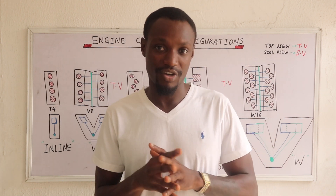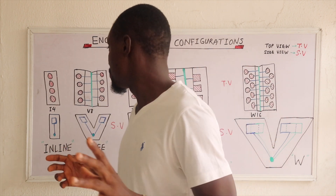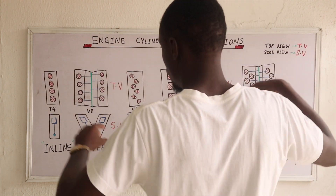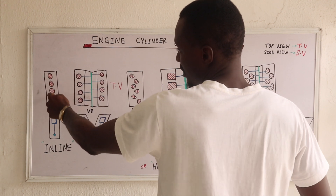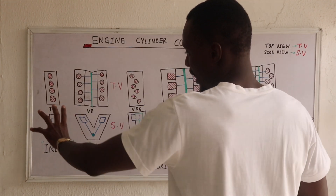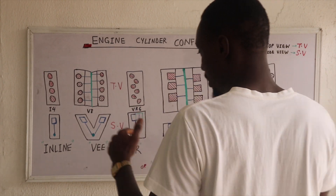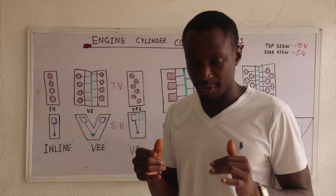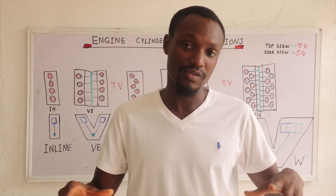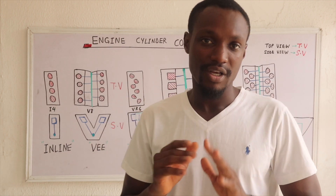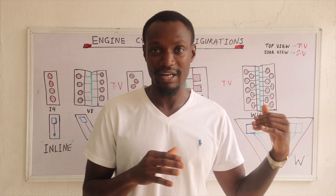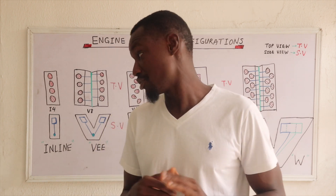Cylinder configuration is simply how the cylinders are arranged in the engine. The top diagrams show a top view — looking at the engines from above, where you can see the cylinders from that perspective. The side view shows the engines from the side. I'm not necessarily saying front or side because the engine could be positioned transversely or longitudinally. If you don't understand that, please see my video on engine positioning.